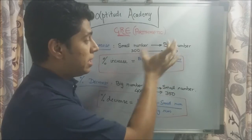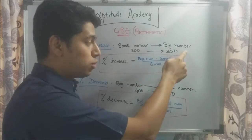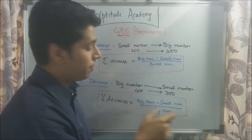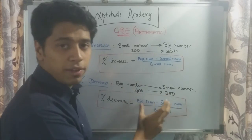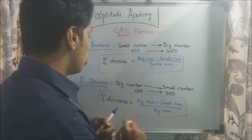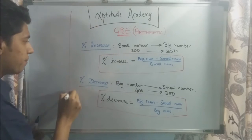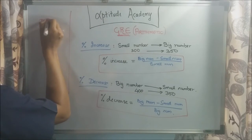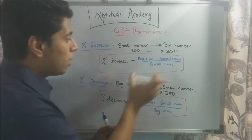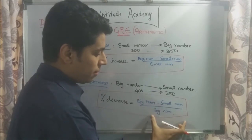Just see what is common in both the formulas. You've got big number minus small number, big number minus small number. So basically, the numerator has to be the difference of the numbers. So 300 goes to 350, find the difference, 50. Here 400 goes to 350, find the difference, 50. So, your generalized formula is going to be difference divided by, what is this small number here and big number here.